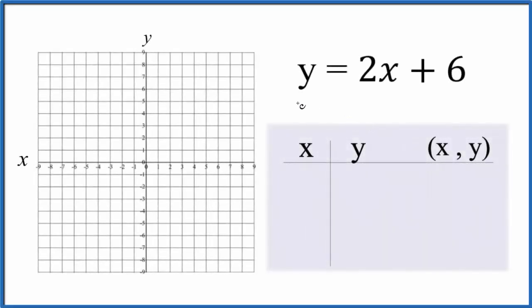Let's graph the linear equation y = 2x + 6. We're going to do this two ways: we'll do a table of values and graph those points, then check our work with the slope-intercept formula.